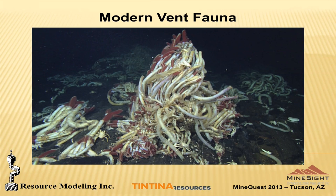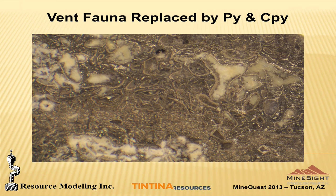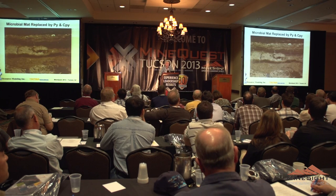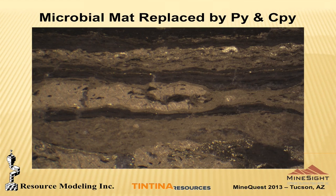We don't think the Black Butte deposit formed from those black smokers, but probably was some sort of submarine hot springs venting area on a shale-dominated basin. We've all seen the worm tubes and other critters that flourish around submarine vents. And in these 1.2 billion year old rocks at Black Butte, there was primitive biota living around those seafloor vents. This shot shows pyrite and chalcopyrite replacing some of those primitive vent fauna, and here are microbial mats — algae-like primitive biota — that were growing around those vents, now replaced by sulfides.